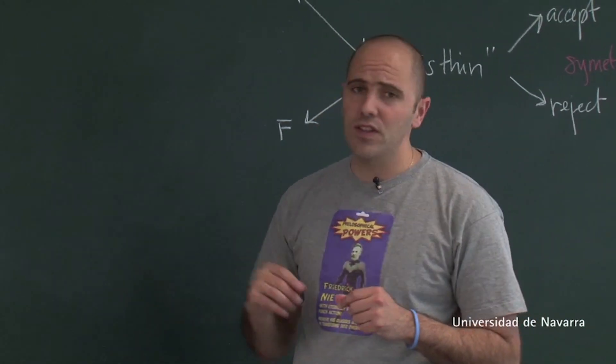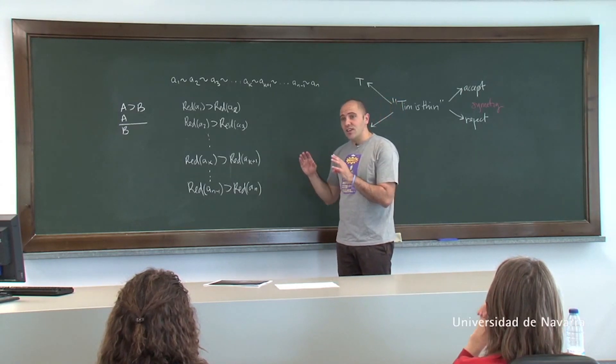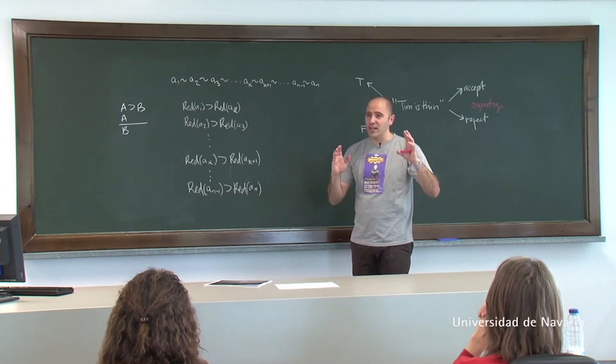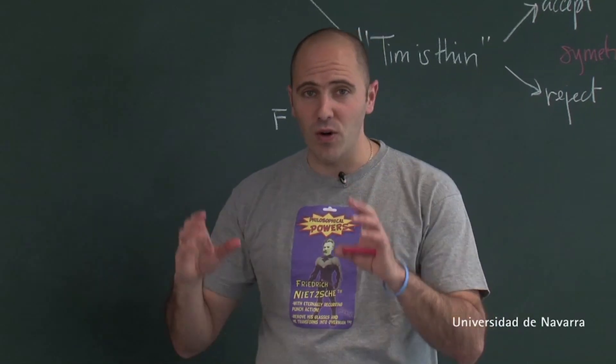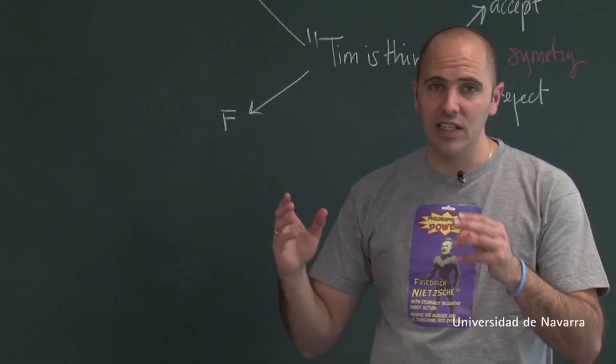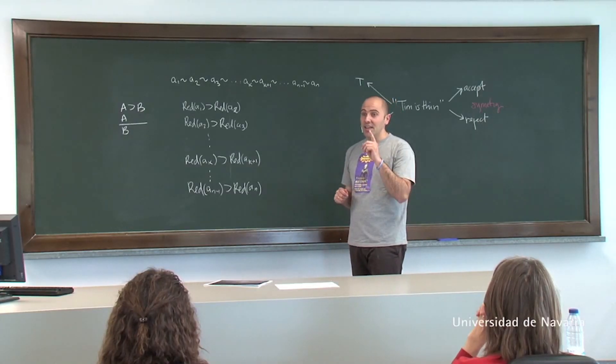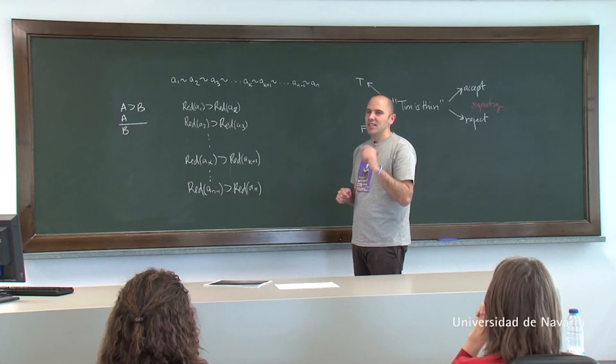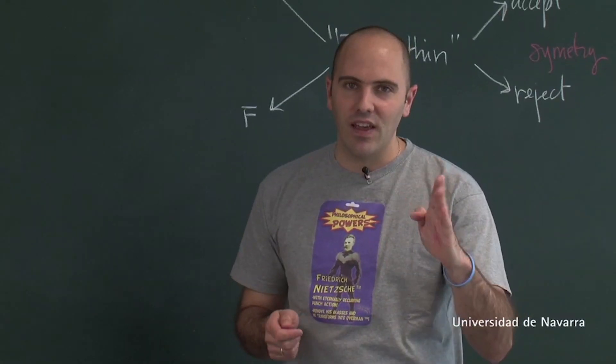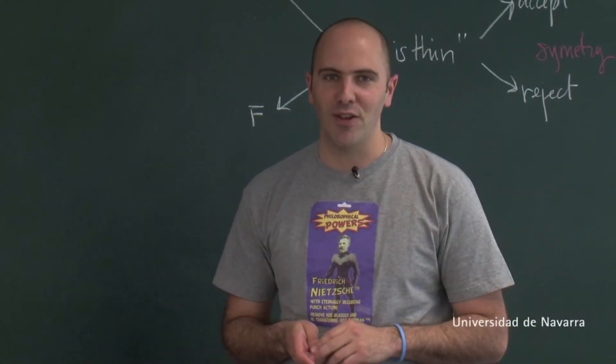I don't know if you have seen Noah Kalina's everyday video. This is a very nice example of a sorites paradox in video form. So Noah starts to take pictures of himself when he was in his early 20s. And the question is whether you can identify a point in the video where Noah is in his early 20s and a second later he is not in his early 20s. So that's the sorites paradox.